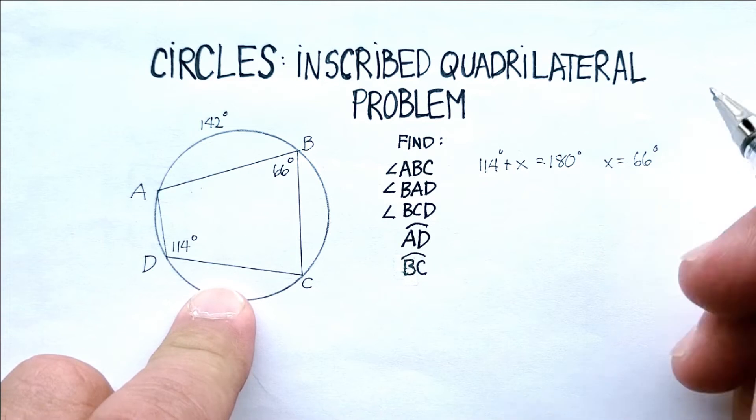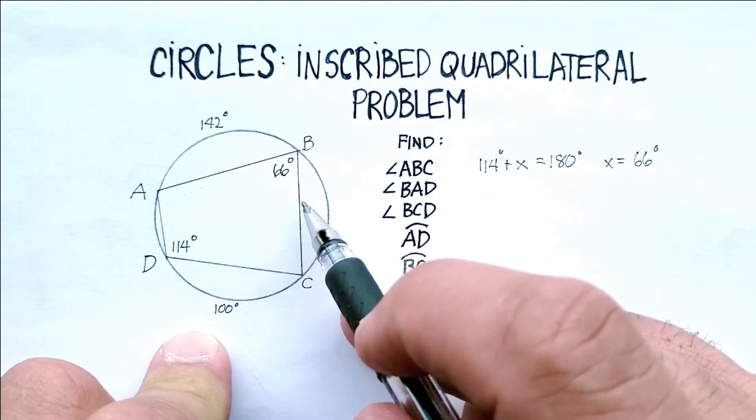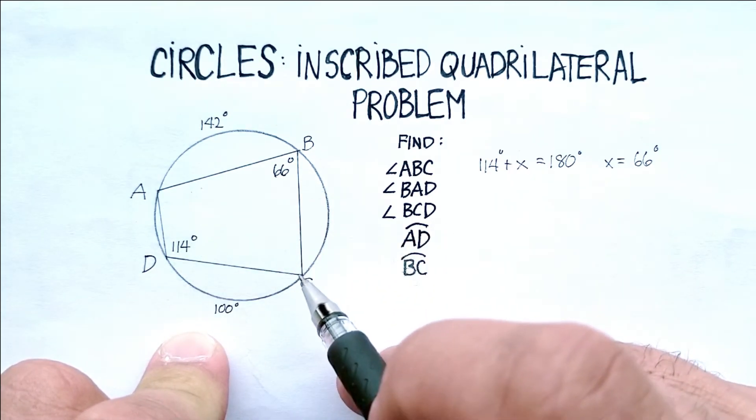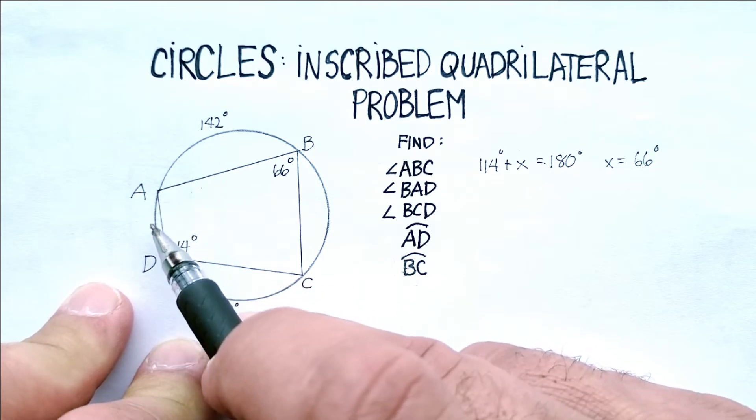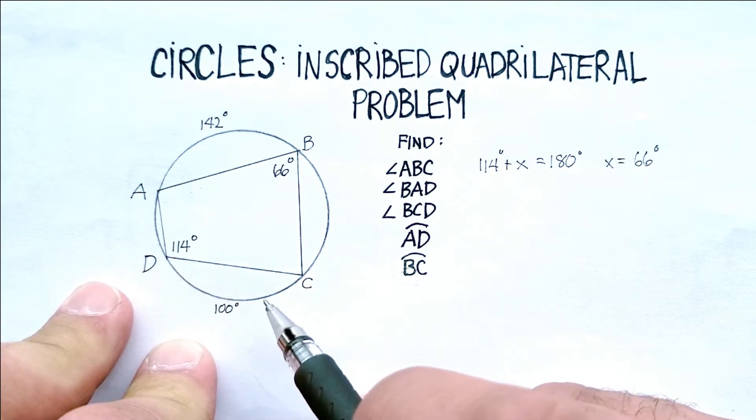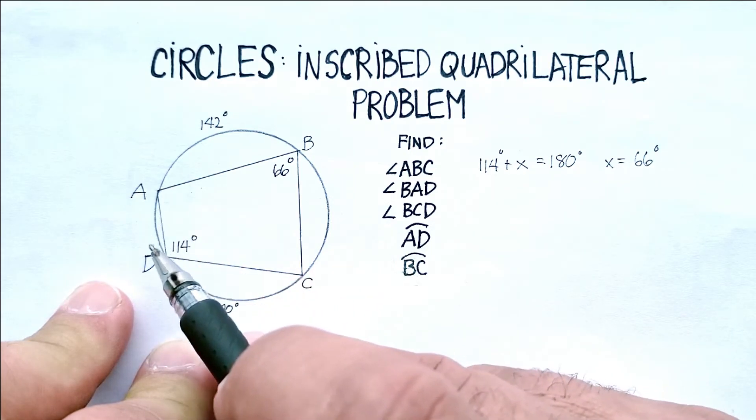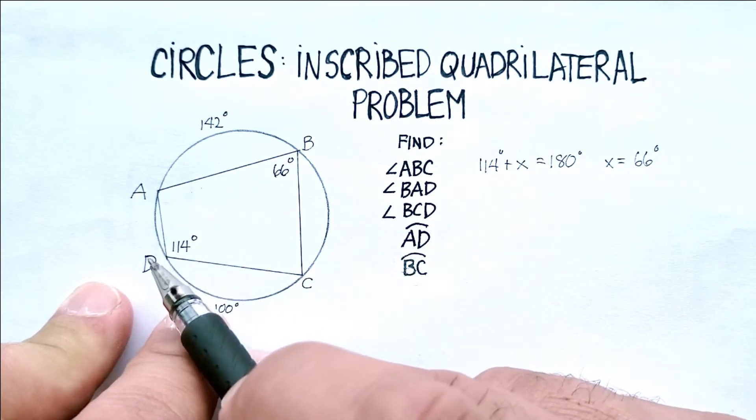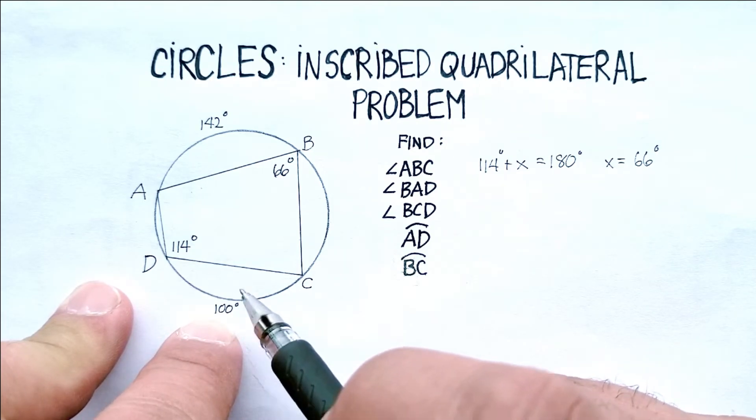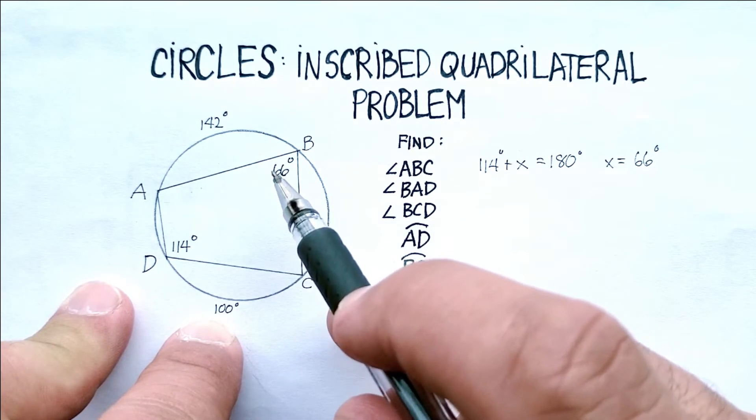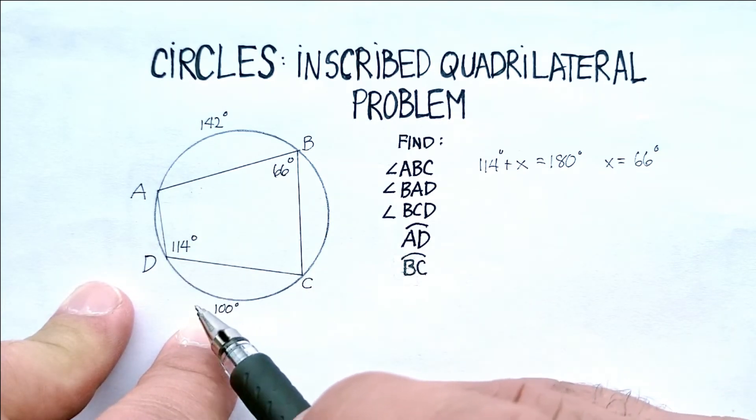Okay, now what else can we find? Well we also know that angle ABC is an inscribed angle for this arc right here, right? Arc AC. Now we have this portion of the arc already labeled as 100, and we also know that this should be half of this whole angle, or this whole arc right here.